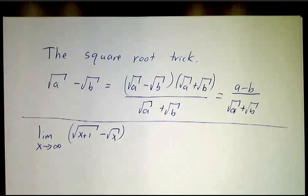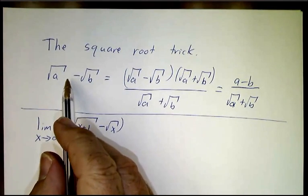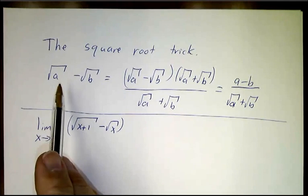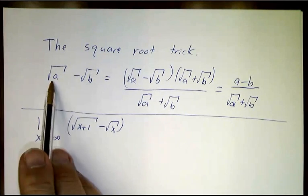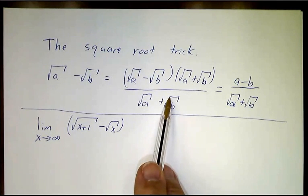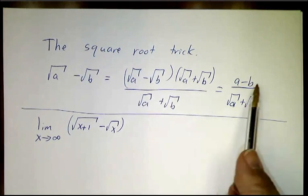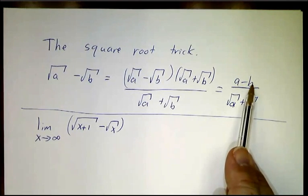Last example. We saw that when taking other kinds of limits, the square root trick was useful. If you're dealing with two square roots, you can often multiply and divide by the sum of the square roots. And root a minus root b times root a plus root b just turns into a minus b. That's often easier to handle.